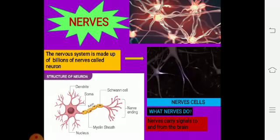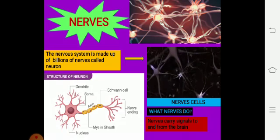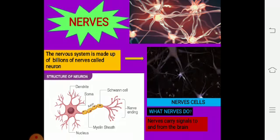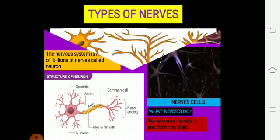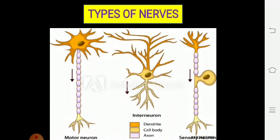Now, let's look at what nerves do. Nerves carry signals to and from the brain. Nerves carry your messages from your sense organs to your brain and from the brain back to your sense organs. Next, types of nerves — as you can see clearly in the given picture, we have three types of nerves: first, motor neuron; second, interneuron; and third, sensory neuron.